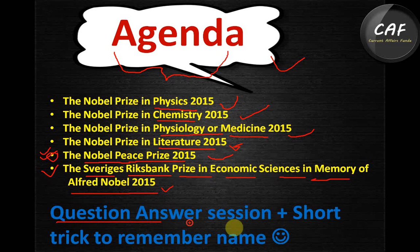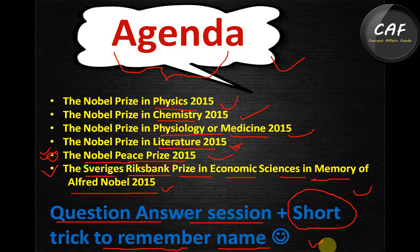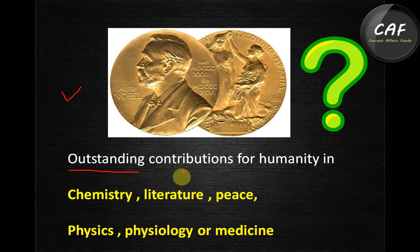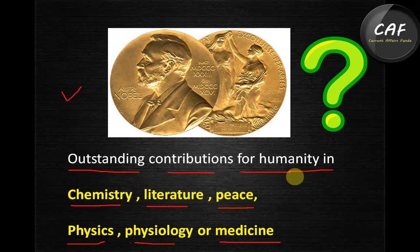After that, I'll discuss a question-and-answer session with some static questions from trivia, and I'll tell you some tricks to memorize these Nobel Prizes. The Nobel Prize is awarded for outstanding contributions to humanity in Chemistry, Literature, Peace, Physics, and Physiology or Medicine — these are the basic five to six sections.